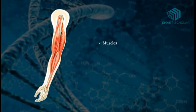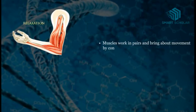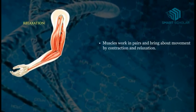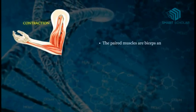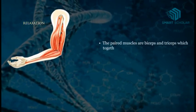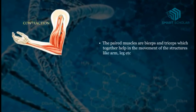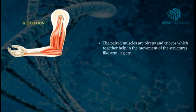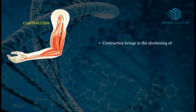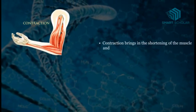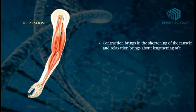Muscles work in pairs and bring about movement by contraction and relaxation. The paired muscles, biceps and triceps, together help in the movement of structures like arms and legs. Contraction brings about the shortening of the muscle and relaxation brings about the lengthening of the muscle.